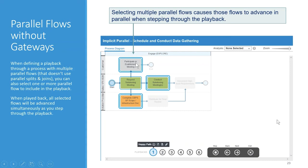When defining a playback through a process with multiple parallel flows that don't use explicit parallel splits or joins, you can also select one or more parallel flows to include in the playback and the behavior will be the same — all selected flows will advance simultaneously as you step through. The difference is that since there's no join, they won't wait for each other. These flows will each advance one step at a time until each reaches the end of its particular path.